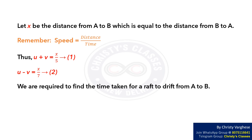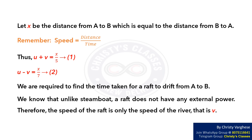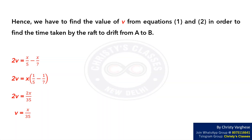We are required to find the time taken for the raft to drift from A to B. Unlike a steamboat, a raft does not have any external power. Therefore, the speed of the raft is only the speed of the river, that is V. Hence we have to find the value of V from equations 1 and 2 in order to find the time taken by the raft to drift from A to B.